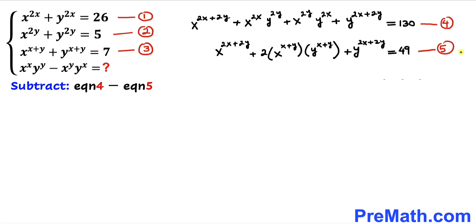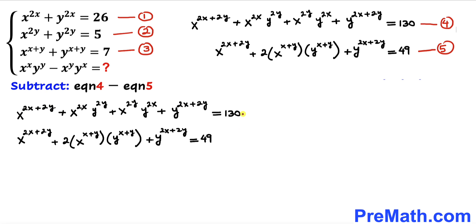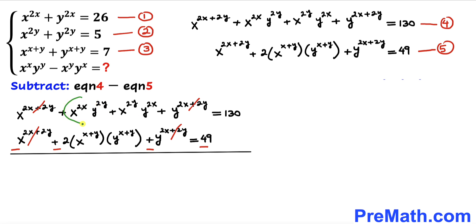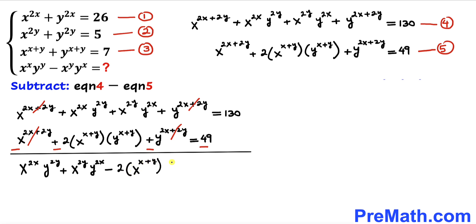Now let's subtract equation five from equation four. Changing the signs of equation five's terms, x^(2x+2y) cancels with x^(2x+2y), and y^(2x+2y) cancels with y^(2x+2y). We are left with: x^(2x) × y^(2y) + x^(2y) × y^(2x) − 2 × x^(x+y) × y^(x+y) = 130 − 49 = 81.